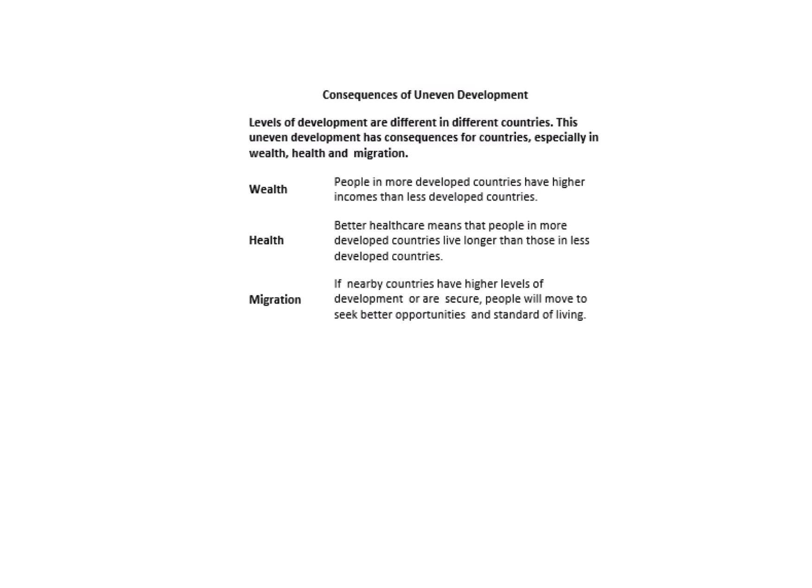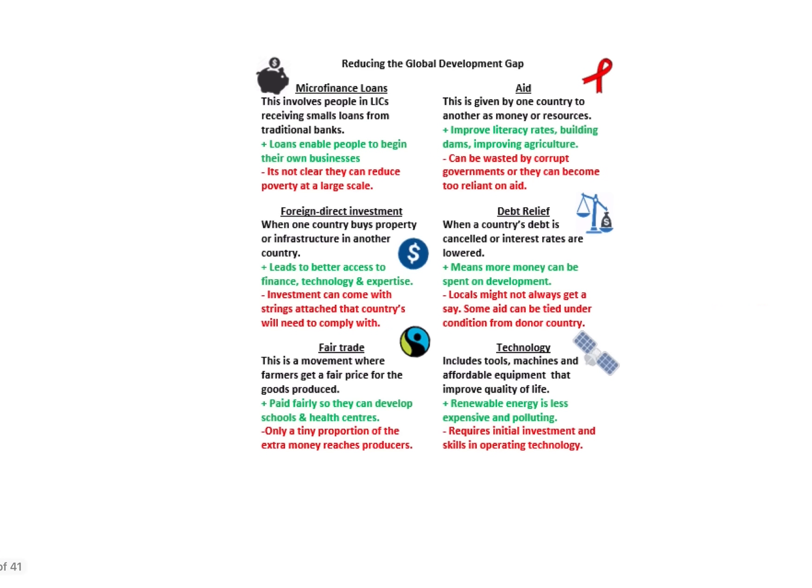The consequences of uneven development include wealth disparities, healthcare differences (better healthcare in developed countries increases life expectancy), and migration (countries with more secure resources attract people as a pull factor). The development gap is the gap between the world's richest and poorest countries. There are six ways to reduce it on screen — you might be asked to evaluate solutions for 9 marks, so commit three to memory with a positive and negative for each.